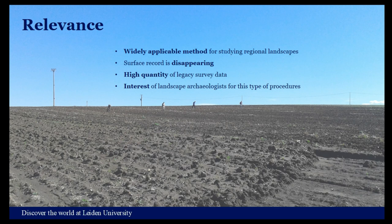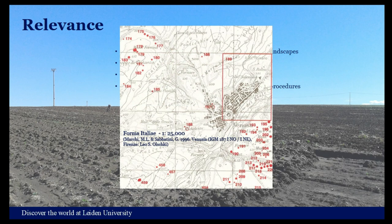Legacy survey data are data registered in the early decades of archaeological survey, often before the rise of massive environmental destructions triggered by anthropogenic activities such as intensive agriculture, when survey methodology was still in development. Usually this data consists of registers of archaeological sites only roughly described and represented as dots, points, or polygons on large-scale topographic maps. Despite the lack of detail, devising a method to realize the potential of this data is extremely important, as legacy data will soon likely be the only available source to study past settlement dynamics for many regions.